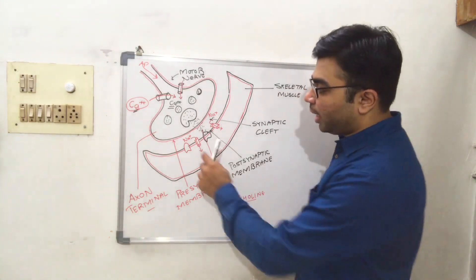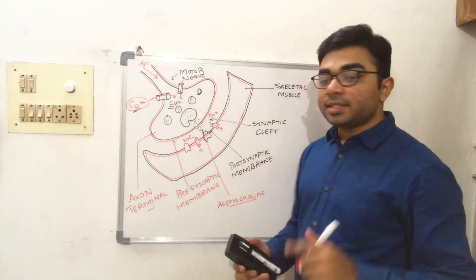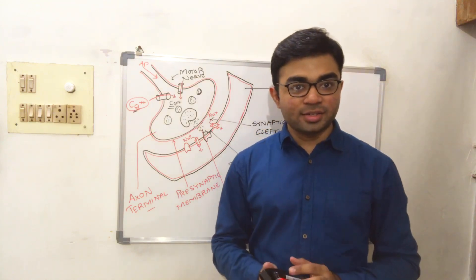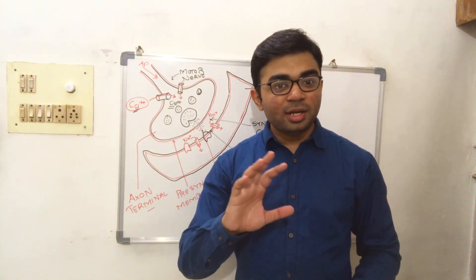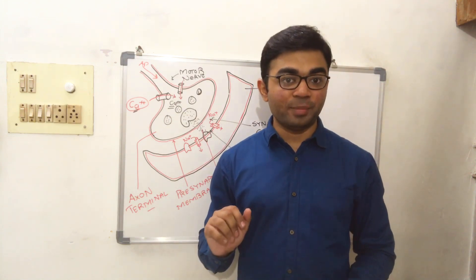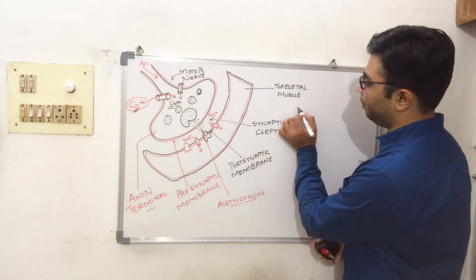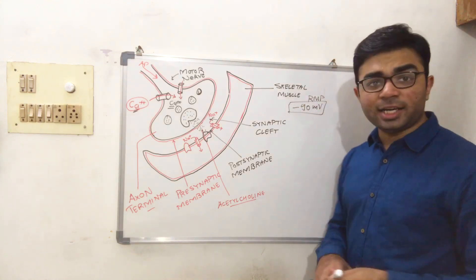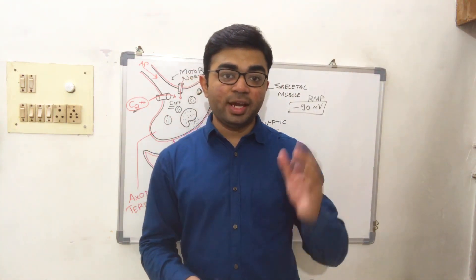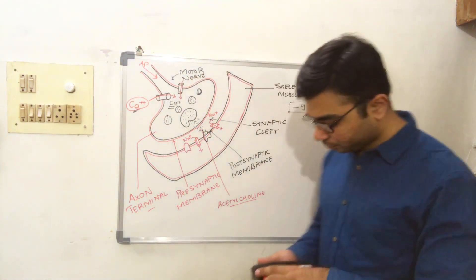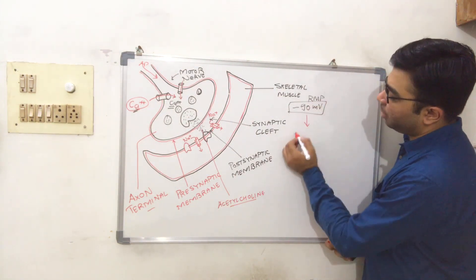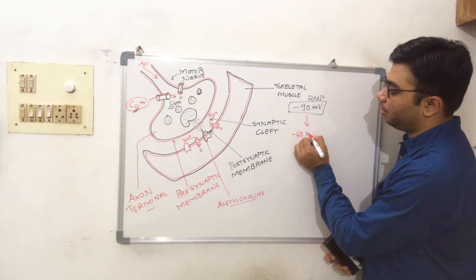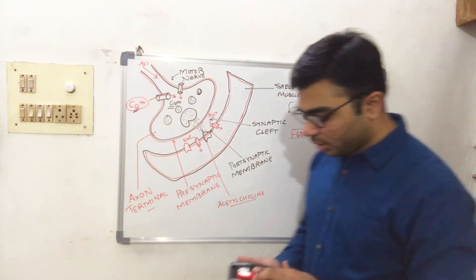Sodium ions from the extracellular fluid then enter into the skeletal muscle. This entry of sodium ions ultimately alters the resting membrane potential of the muscle. The resting membrane potential of skeletal muscle is approximately minus 90 millivolts. As soon as sodium ions enter, it initiates depolarization.